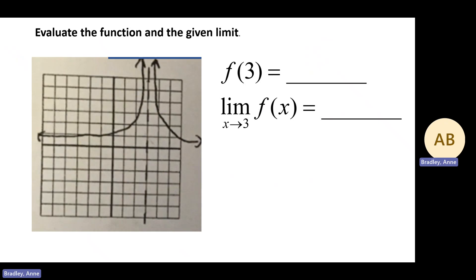Evaluate the function at the given limit. Let's start by evaluating f of 3 — we go to x equals 3 on the x-axis and locate it. In this case, we see a vertical asymptote. Your graph will never cross or intersect a vertical asymptote, so there will be no output value. For that reason, our answer is undefined.